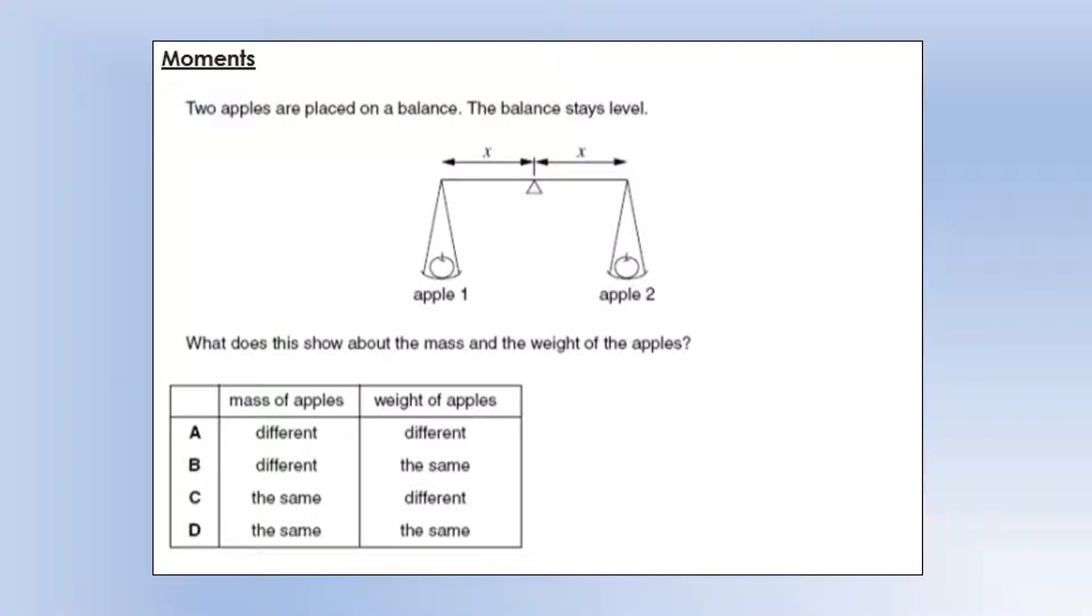All right, let's look at some problems on moments. We've got two apples placed on a balance, and we can see that they are equal distances from the pivot, and it says the balance stays level. What does this show about the mass and the weight of the apples?